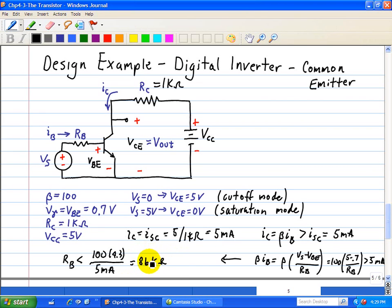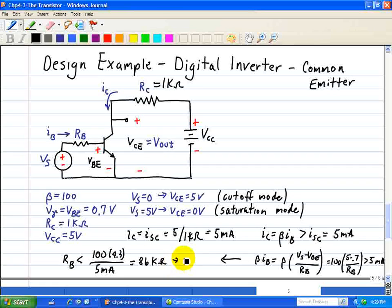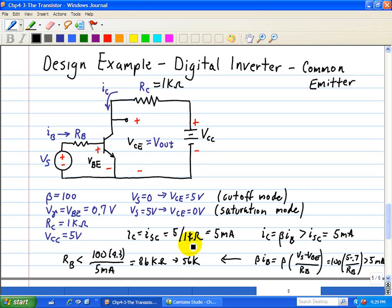So any reasonable value less than 86 kilo ohm, let's say 56 kilo ohms, and that's a standard value, will make this work such that when we select that resistor value, let's say 56k, this transistor will operate in the saturation mode, and when it's in saturation mode, this implies that when VS is equal to 5 volts, the output voltage Vce is equal to 0 volts.